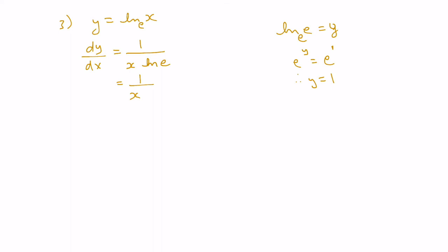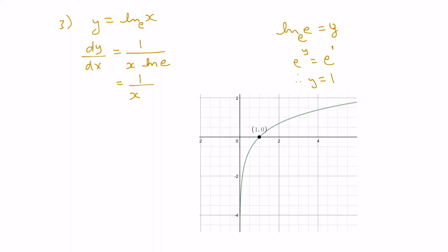Let's look at this graphically. This is the graph of y equals ln x. Let's say we wanted to know the slope of the tangent line when x equals 1. Drawing in a tangent line at that point, to find the slope we substitute 1 into the derivative of ln x. Since the derivative is 1 over x, substituting 1 gives 1 divided by 1, which equals 1. Therefore the slope of the tangent line at x equals 1 is 1.